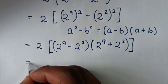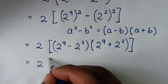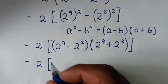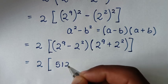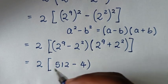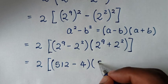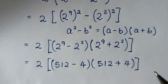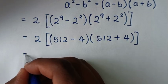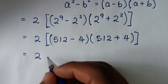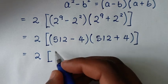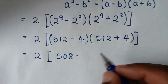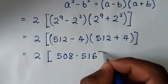Then in the next step it will be equal to 2, then here bracket, converting the exponents to numbers: 2 power of 9 is 512, minus 2 power of 2 is 4, then bracket, times bracket 2 power of 9 is 512, plus 2 power of 2 is 4, bracket. Then in the next step it will be equal to 2, then bracket: 512 minus 4 is 508, times 512 plus 4 is 516, bracket.